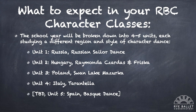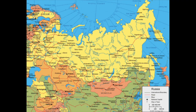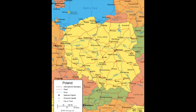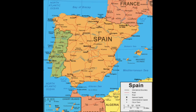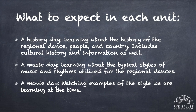The school year will be broken down into four to five units, each studying a different region and style of character dance: Unit 1 Russia, Unit 2 Hungary, Unit 3 Poland, Unit 4 Italy, and potentially Unit 5 Spain. Each unit will include three special days: a History Day, where we learn about the history of the regional dance, people, and country including cultural history and information; a Music Day, where we learn about the typical styles of music and rhythms utilized for the regional dances; and a Movie Day, where we will watch examples of the style we are learning at the time.